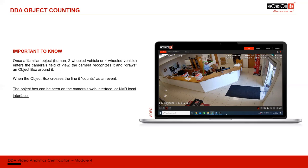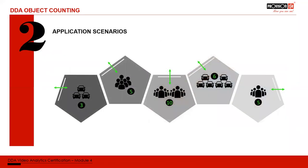Understanding the object box is important because it helps us install the camera in a better way. These object boxes can be viewed through the NVR locally — you can turn them on or off — and also through the camera's own web interface.